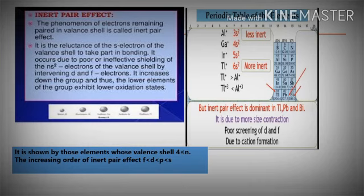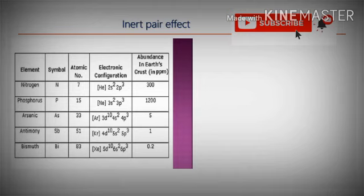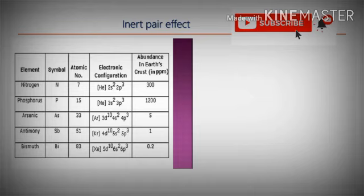See the P-block elements — that is the boron family, carbon family, and nitrogen family. See the group 15 elements: nitrogen, phosphorus, arsenic, antimony, and bismuth. Among these, arsenic, antimony, and bismuth will show high inert pair effect compared to nitrogen and phosphorus. This is because arsenic has 4s electrons, antimony has 5s electrons, and bismuth has 6s electrons. The inert pair effect is seen more in the S orbital than in P, then D, and lastly F orbital.